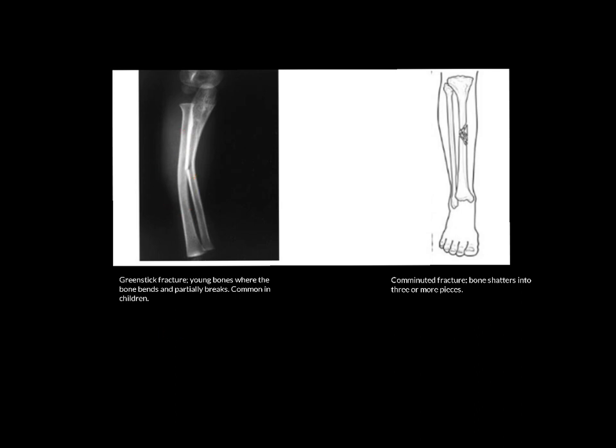Greenstick fractures are common in children because the bones in children's limbs are still quite pliable — they can bend a little bit before they ultimately break. Unrelated to that, a comminuted fracture is where the bone shatters into at least three or more different pieces, usually caused by quite a heavy impact or collision — as you can see with the tibia here.